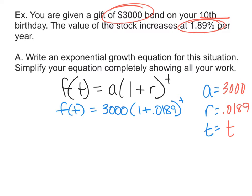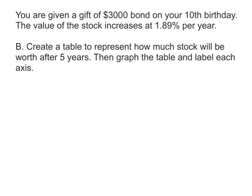I'm done. I can't go any farther in this equation, because I don't know what the value of T is. If I knew the value of T, I could take this and find a determination, but we're going to do that in the next part. Alright, so here's the problem. You're given a gift, 3,000 bond on your 10th birthday. The value of stock increases at 1.89%. Create a table to represent how much stock will be worth after five years. Then, graph the table and label each axis. So, I'm going to talk about my time, which of course is in years. And then, I'm going to talk about my value. How is my value changing of this bond?